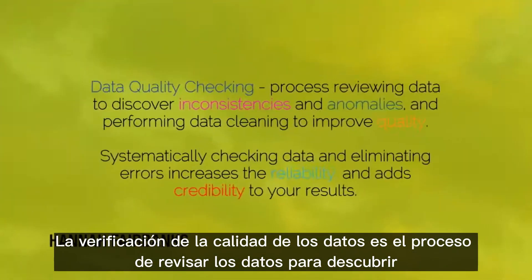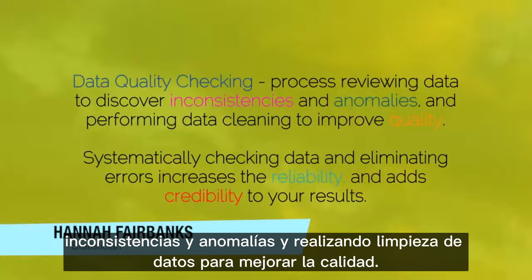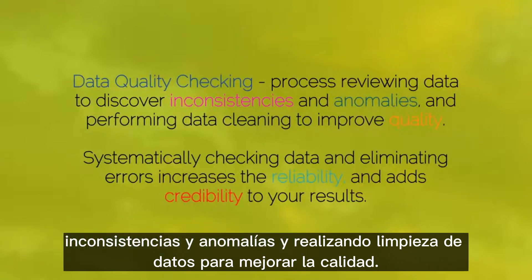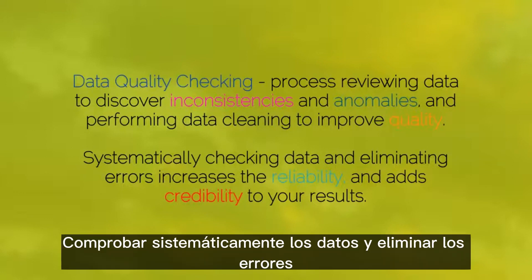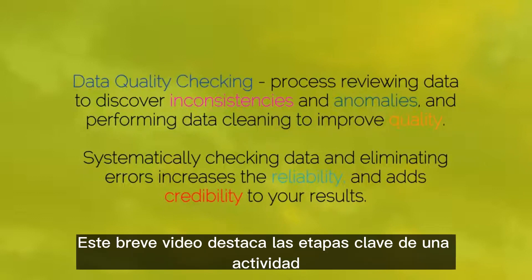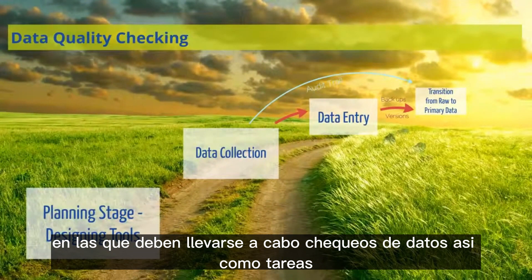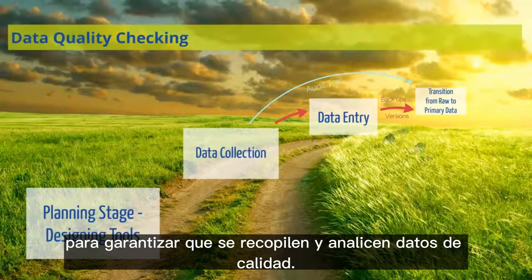Data quality checking is the process of reviewing data to discover inconsistencies and anomalies, and performing data cleaning to improve the quality. Systematically checking data and eliminating errors increases the reliability of and adds credibility to your results. This short video highlights key stages in an activity at which data checks should be carried out and activities performed to ensure the activity collects and analyses quality data.